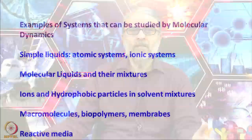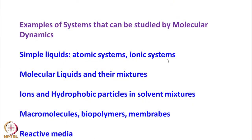What kinds of systems can be studied today? We can study simple liquids like atomic systems, ionic systems, ionic solutions, molecular liquids such as water, different solvents, mixtures of solvents, ions and hydrophobic particles in solvent mixtures, macromolecules, biopolymers, membranes, and even reaction media. All of this uses classical mechanics as an approximation, so there will be some errors; but if these corrections are less than 2 to 5 percent, we have a reasonable solution.